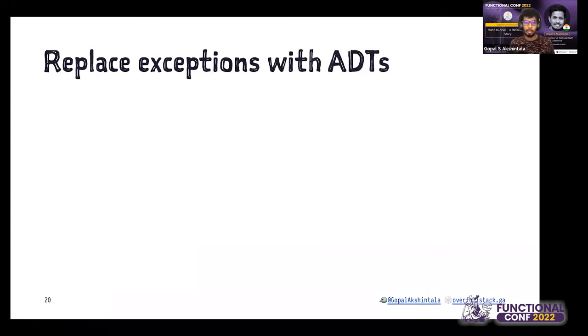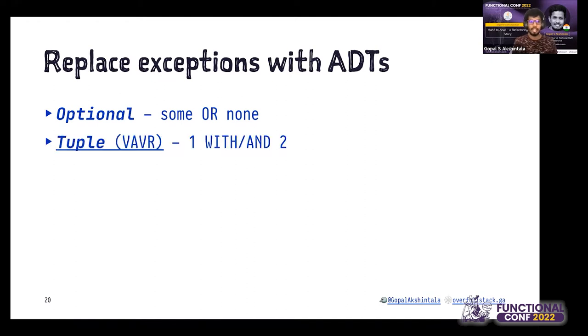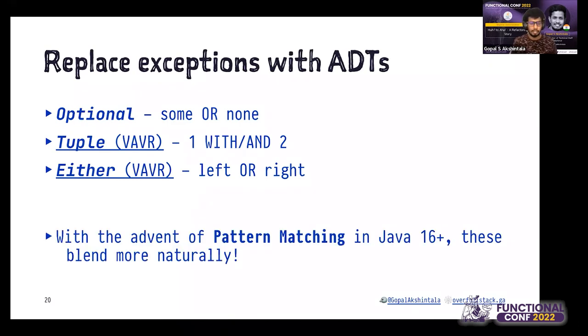You should be able to replace all exceptions with ADTs unless they are really exceptional. ADTs stand for algebraic data types. I'm going to focus on simple ADTs that come out of the box or from third-party libraries: Optional, Tuple which represents a pair, and Either which is left or right. To be frank, Either is a monad, but it's not scary—it's just an interface having two implementations. I can't go into details in this talk, but the link has all the documentation. With the advent of pattern matching in Java 16 plus, these are going to blend more naturally into the language, making it easier to have switch case statements on these ADTs.